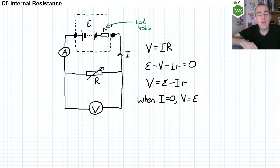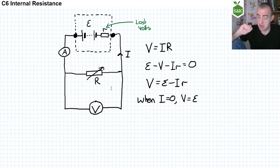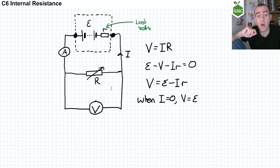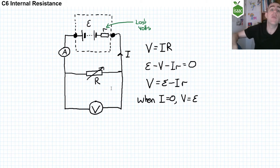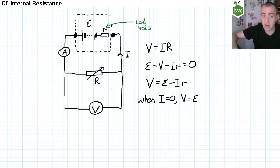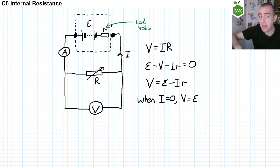This explains why when you connect lamps in parallel, you do in fact see a difference in brightness, despite the fact that theoretically there shouldn't be one. As you connect more lamps in parallel, the load resistance drops, meaning a larger share of resistance is in the internal resistance, giving more lost volts. As we have more lost volts, the terminal voltage goes down, so the voltage across each lamp drops and the brightness of each lamp drops. If there were no internal resistance, adding lamps in parallel would not change their brightness.